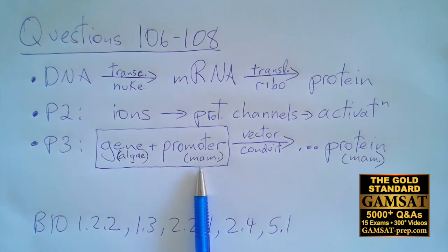The size of the channel protein might have an effect if it's so small that it starts to block the movement of ions. But frankly, without the right promoter, there'll be no expression of DNA at all for this gene. And so by far, 107, answer choice B is the best response.